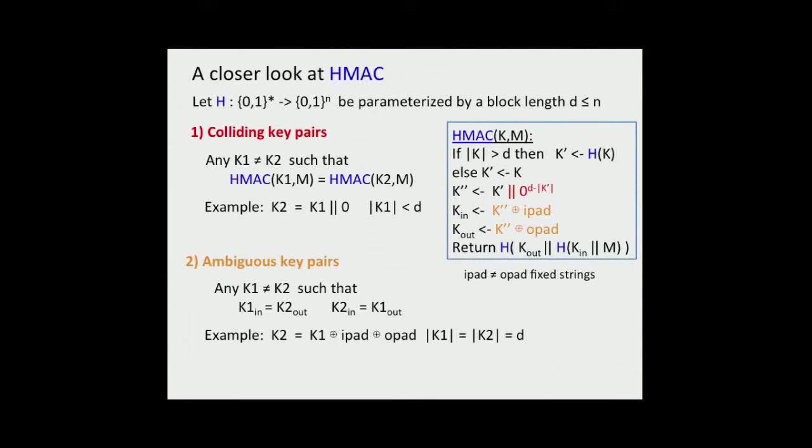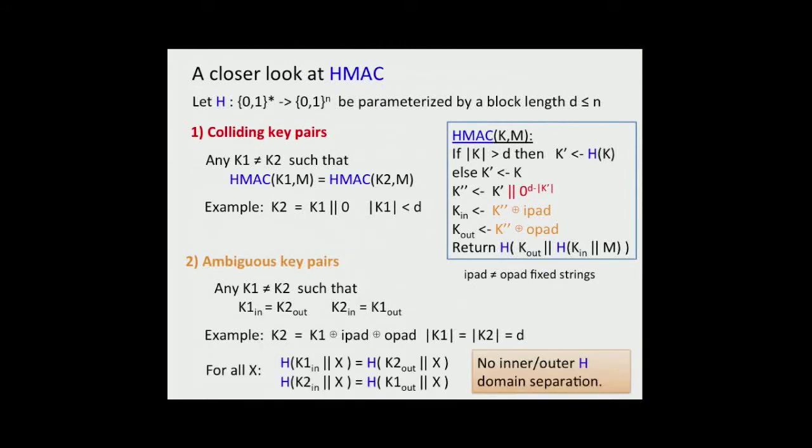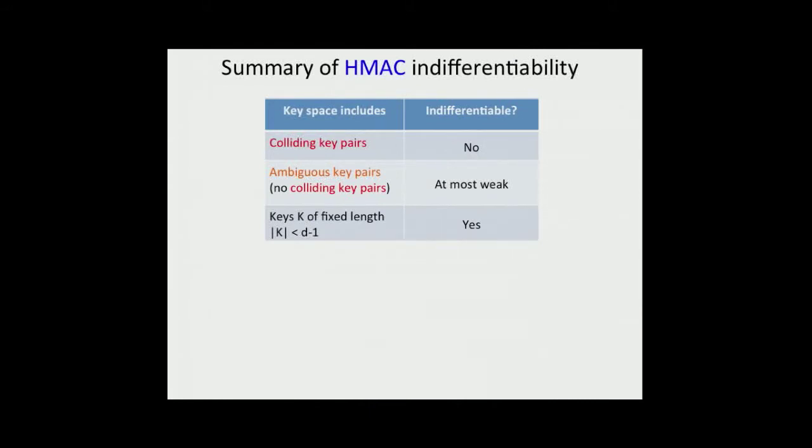The second type of key pairs that are weak are called ambiguous key pairs, and these arise in the way that domain separation is attempted to be ensured in HMAC. In particular, we can have keys K1 not equal to K2 such that after processing K1-in equals K2-out and vice versa. For example, K2 equal to K1 XOR IPAD XOR OPAD is such a pair. This really means that we get no inner-outer domain separation in applications of H.